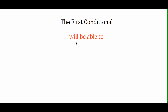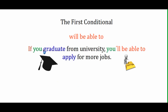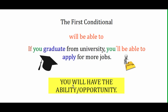If we use 'will' in conjunction with 'be able to,' for example: 'If you graduate from university, you'll be able to apply for more jobs,' this means we'll have the ability or the opportunity. So, if someone graduates, they have the ability or opportunity to apply for more jobs.